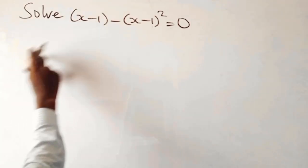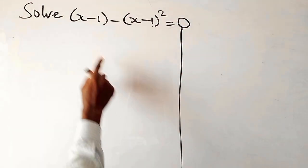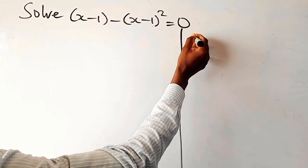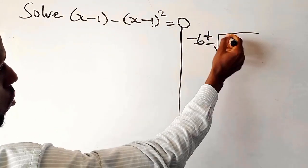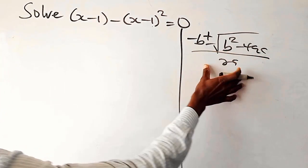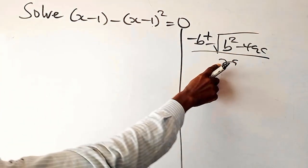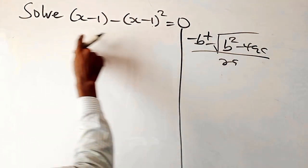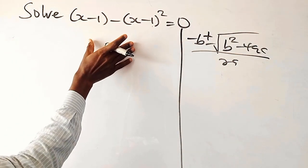We are going to use our quadratic formula, which is minus b plus or minus square root of b squared minus 4ac, over 2a. We are solving this using the quadratic formula, but first, before we start using that, let us write the equation properly.